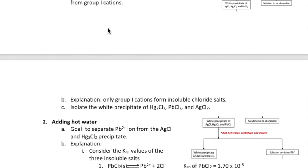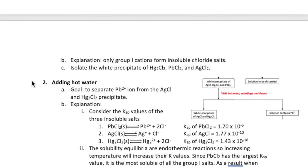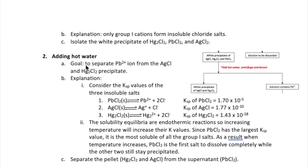Once we are confident that our sample contains only the group one cations, we must separate them out from each other before we can confirm their identities. The first step is by adding water to the precipitate from the previous step and then heating it. When we do this step, only the lead chloride salt will dissolve, while the other two, silver chloride and mercury one chloride, will remain insoluble.